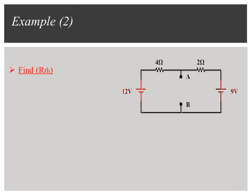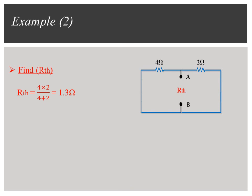To find R-Thevenin, replace the voltage sources with short circuits and calculate the resistance between terminals A and B. As shown in the figure, the 2 Ohm and 4 Ohm resistors are connected in parallel. So R-Thevenin is equal to 1.3 Ohms.